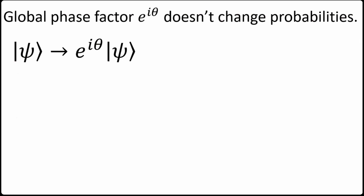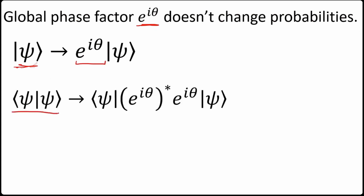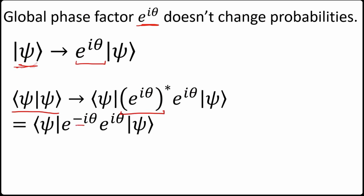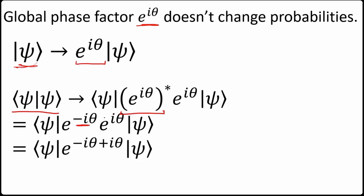Another rule in quantum mechanics: a global phase factor — a complex number with magnitude one — won't change any probabilities. When we apply this transformation to the ket, the bra gets the complex conjugate, so the minus i·θ and plus i·θ cancel and we get one. We can always multiply a state by a complex phase factor without changing the probabilities.